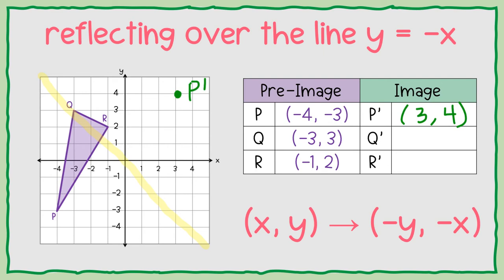Okay, for q prime, same rule. Switch places and change the signs of both of them. So this one is going to be kind of a trick question here. But positive 3 is going to go first. Negative 3 is going to go second if they switch places.